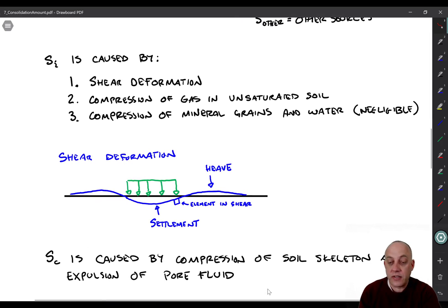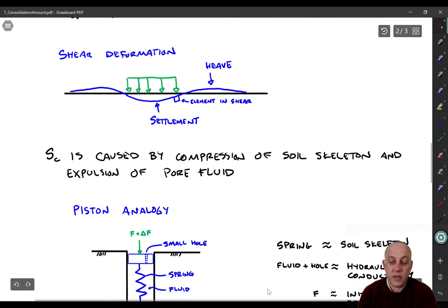Okay, and then there are two other causes of immediate settlement. One is compression of gas in unsaturated soil. So if you have a soil that's not completely filled up with water, there's some air in there, when you load the soil, the air bubbles might shrink a little bit as the water pressure increases, right? So there can be compression of gas, gas is not an incompressible material. For consolidation, we're dealing with saturated soil, so we don't have to worry so much about number two. And then number three is compression of mineral grains and water, and we've already established that that's negligible, so it doesn't mean that it doesn't exist, it's just that it's so small that we don't worry about it.